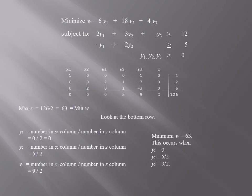I'll leave it to you to check that when you substitute 0 for y1, 5 halves for y2, and 9 halves for y3 in the w equation, you will get 63 for w.